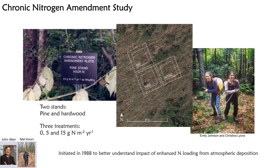The Chronic Nitrogen Amendment Study was initiated by John Aber in 1988 — at the beginning of the LTER as well — so it's been running for longer than 30 years now. This is a set of mega plots, 30 by 30 meter plots that are unreplicated but represent three different nitrogen fertilization treatments. Historically, two different stands were represented: a pine stand and a hardwood stand. The pine stand needed to be discontinued in 2008 following a severe ice storm and the damage caused by that event.